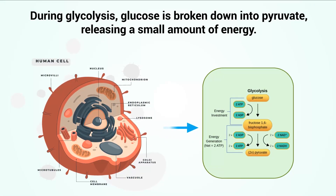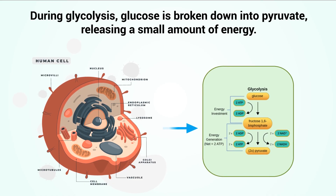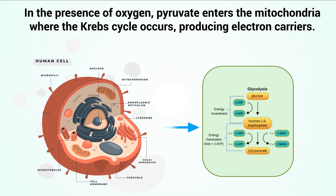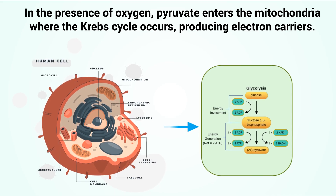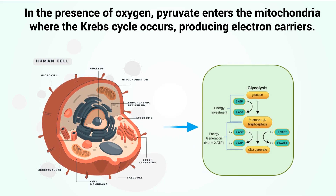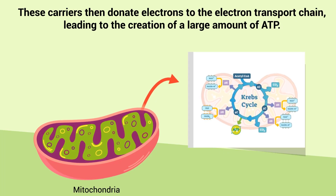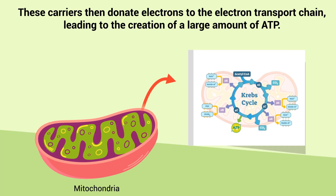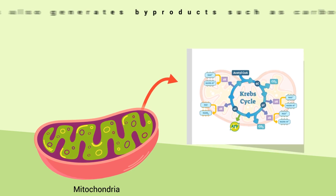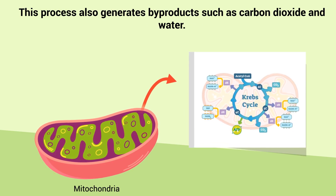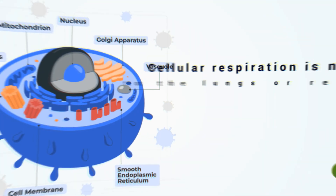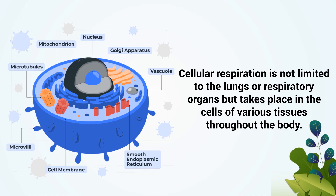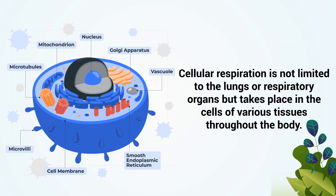During glycolysis, glucose is broken down into pyruvate, releasing a small amount of energy. In the presence of oxygen, pyruvate enters the mitochondria where the Krebs cycle occurs, producing electron carriers. These carriers then donate electrons to the electron transport chain, leading to the creation of a large amount of ATP. This process also generates byproducts such as carbon dioxide and water. Cellular respiration is not limited to the lungs or respiratory organs, but takes place in the cells of various tissues throughout the body.